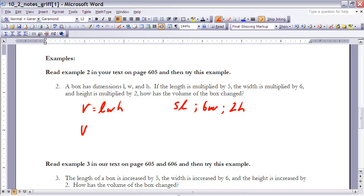My new volume would be 5L times 6W times 2H. Well, we know that multiplication is commutative, so I can take all of my numbers and multiply those together first. 5 times 6 times 2. Well, 5 times 6 is 30. 30 times 2 is 60, so that's the same as saying 60 times the length times the width times the height. Therefore, how is it related? Well, notice how it's 60 times what we originally had. So the answer would be it's 60 times the original value.